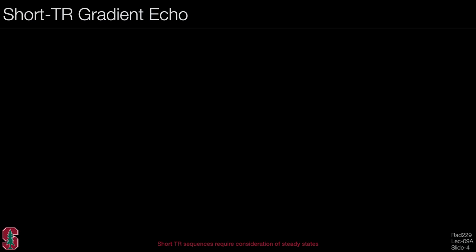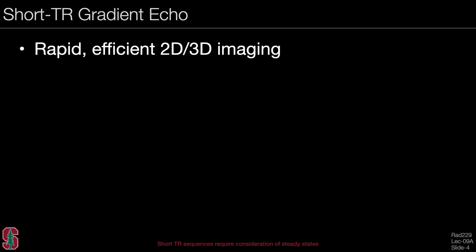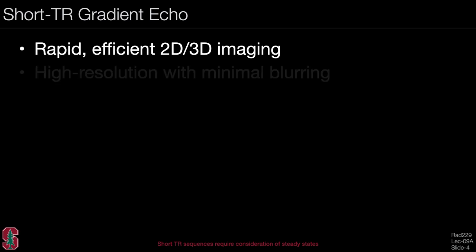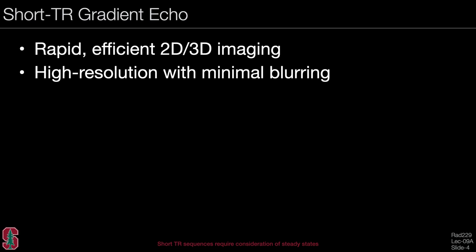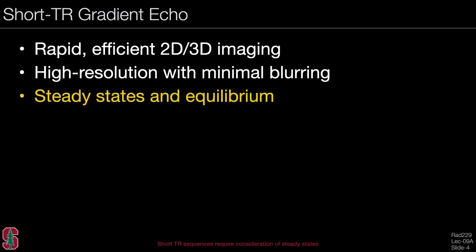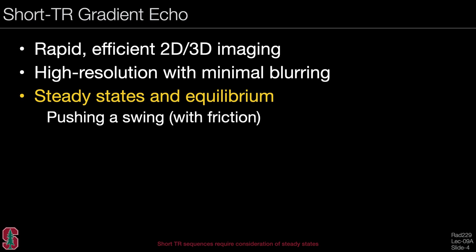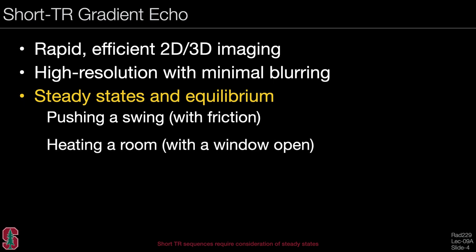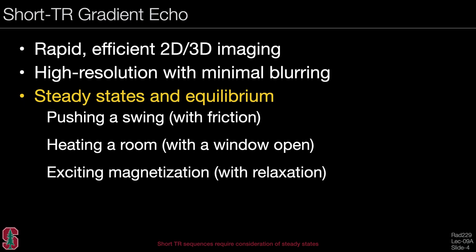In these lectures we will be looking at short TR gradient echo sequences. These sequences represent a rapid and efficient method for 2D and 3D imaging, and often offer high resolution with minimal blurring. It's important to look at steady states and equilibrium. Some analogies include pushing a swing with friction, heating a room with a window open, and exciting magnetization with relaxation. All of these have a driving function but also have some loss in the system. The loss in MRI is what makes the system stable.